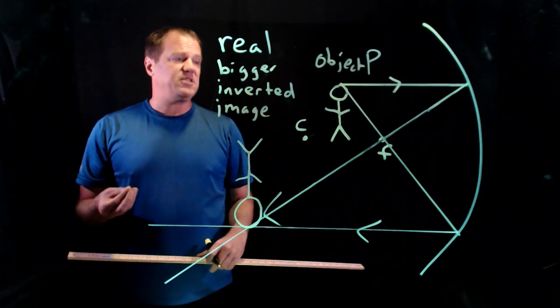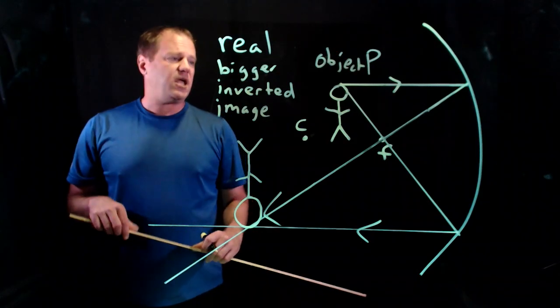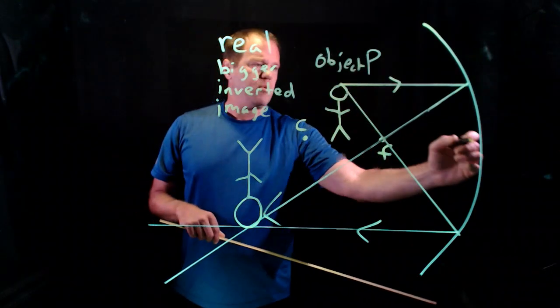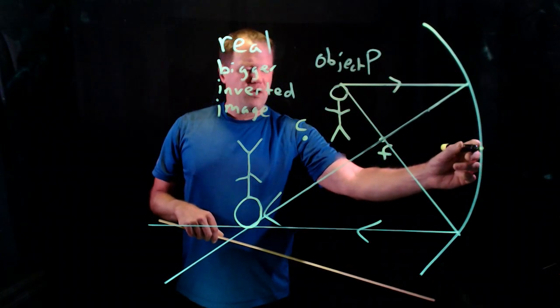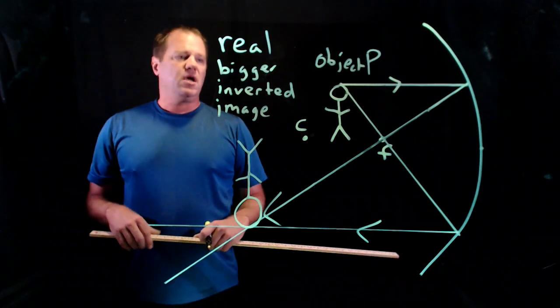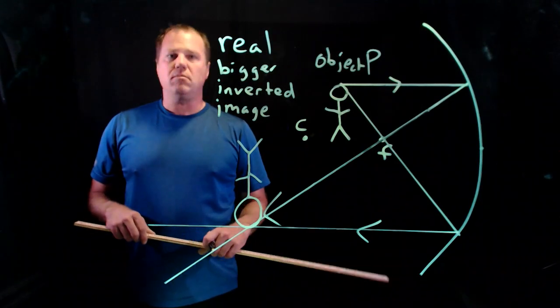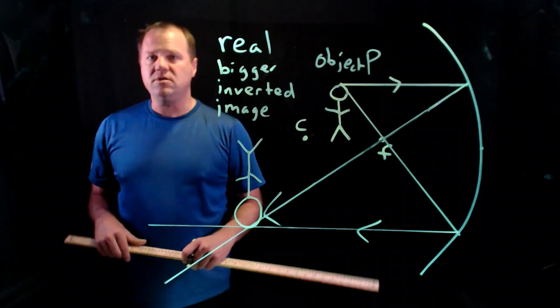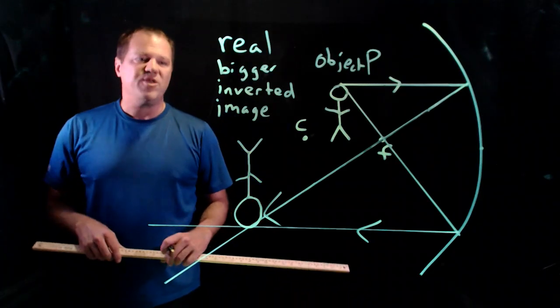So we don't have a third line that's easy to draw. You certainly can try to use some people will draw a third one to here and then obey the law of reflection or something like that. But this is good enough, you have two rays, you can triangulate where the image is.